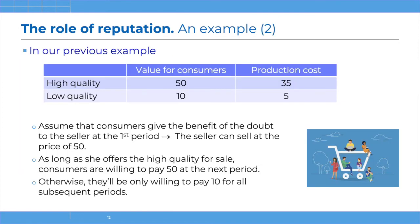Here is the formalization using the same numbers: high quality has a value of 50 for consumers, low quality a value of 10; it costs 35 to produce one unit of high quality and just 5 to produce a unit of low quality. Consumers give the benefit of the doubt to the seller in the first period — they believe they will receive high quality and are willing to pay up to 50. Period after period, as long as they receive high quality again and again, they're still willing to pay that price.